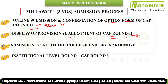For Round 2, a provisional allotment is displayed. If you have any grievances, you need to submit them again. Then the final merit list for Round 2 is displayed. For admission to the allotted college at the end of CAP Round 2 — if a college is allotted to you in Round 2, you have to go to that college, report there, and submit all the documents required by the college.